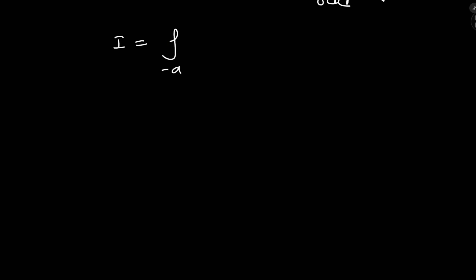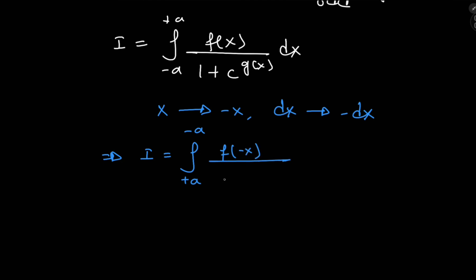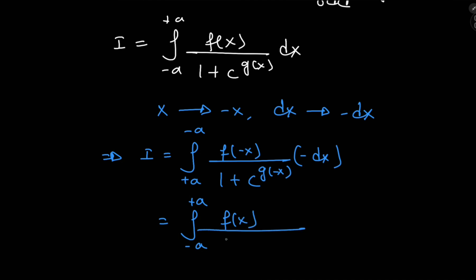Let me rewrite the structure: integral from negative to positive a of even function f of x divided by 1 plus c to the odd function g of x dx. To solve the general case, let's perform a transformation from the x realm to the negative x realm. That takes dx to negative dx, which implies that I can now be written as an integral from positive a to negative a of f of negative x divided by 1 plus c to the g of negative x, times negative dx. Switching up the limits of integration, we get once again an integral from negative to positive a of f of x — because f is even — divided by 1 plus c to the negative g of x, because g is an odd function. We got rid of the negative sign thanks to the extra negative sign from the switch of limits.